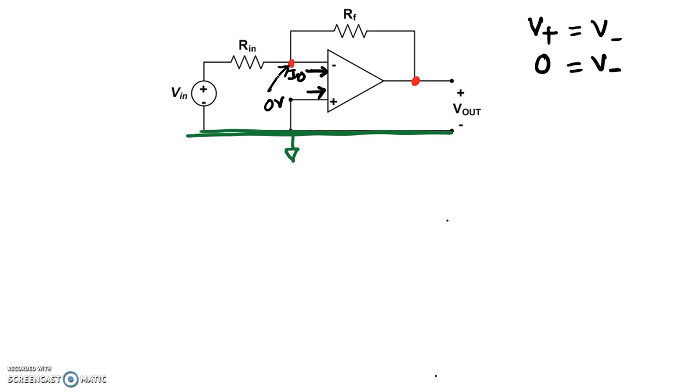But before we can do that, we need to pick the direction of current. Let's arbitrarily draw the direction of current as I1, I'll call that I1. And then here's another direction for current I2, the current that comes out of the node right there. So according to Kirchhoff's current law, at this particular node right here, let me call that node A, at A by KCL, if I apply Kirchhoff's current law.